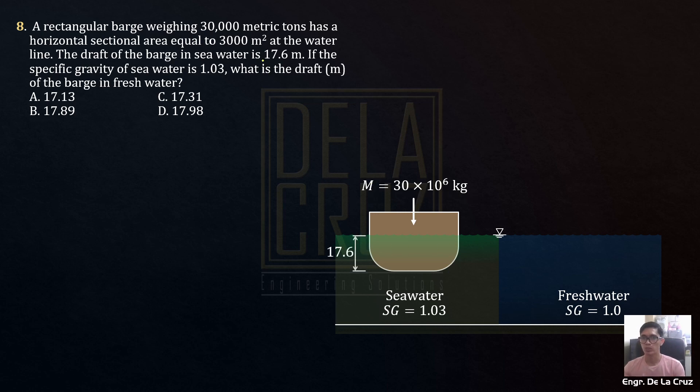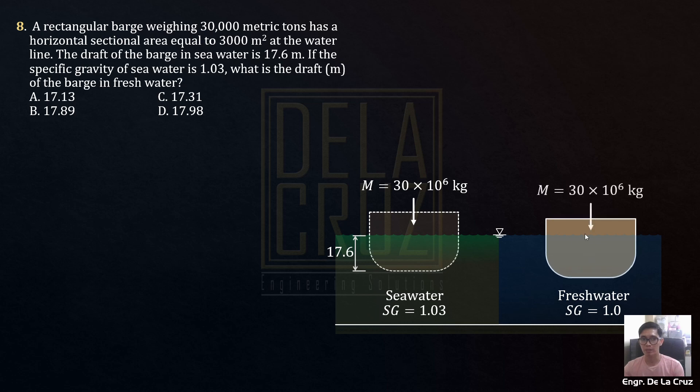So this is our draft at the seawater, 17.6 meters. What will be the draft when the barge goes to fresh water? What will happen? Like this. The behavior of this barge, it will go down. It will have a slightly bigger draft. And let's call the change in draft as delta D. Why does it go down? This will be the draft in fresh water. Let's just call it D. Why does it go down?